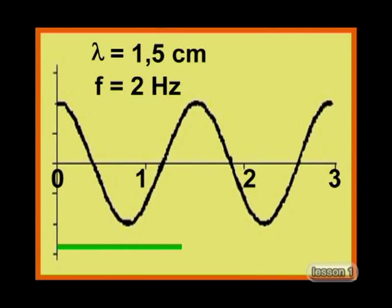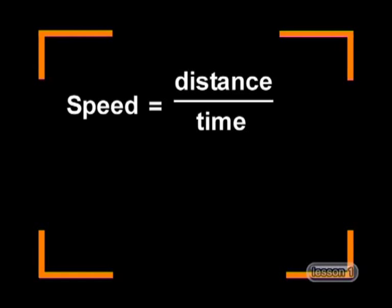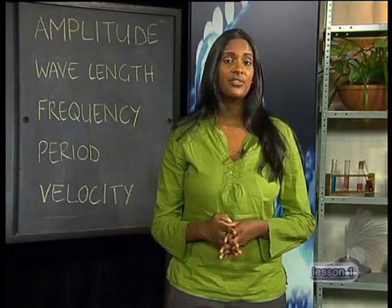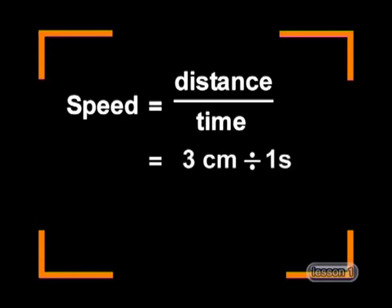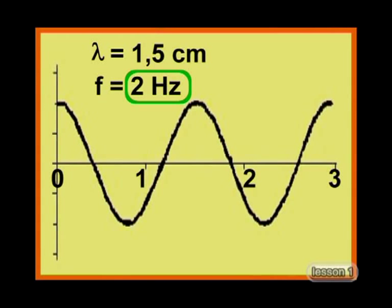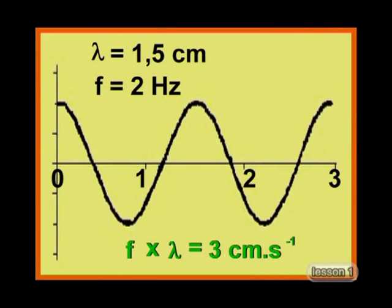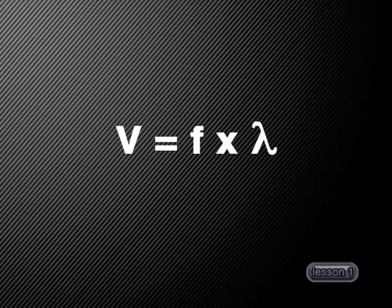The wave has a wavelength of 1.5 centimeters and a frequency of 2 hertz, and is moving from left to right. To calculate speed, we use the equation speed equals distance divided by time. The wave has moved 3 centimeters in one second, so we say the wave has a speed of 3 centimeters per second. Notice that if we multiply the frequency by the wavelength — 2 hertz times 1.5 centimeters — we get the same answer of 3 centimeters per second. So to calculate the speed of a wave, we can multiply the frequency by the wavelength.